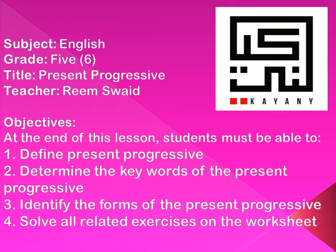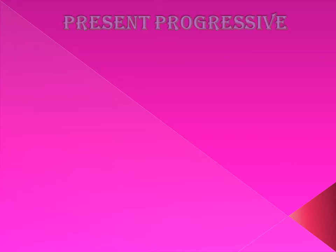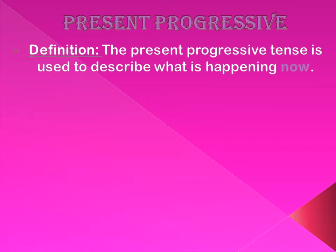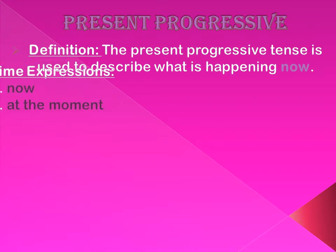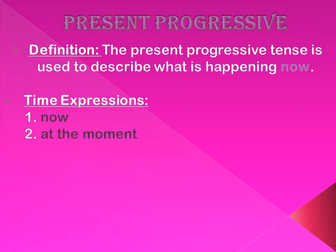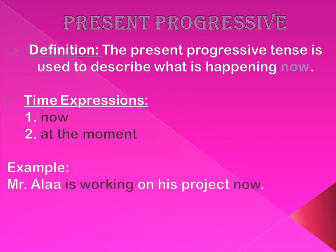Let's start our lesson. We'll start by defining the present progressive tense. The present progressive tense is used to describe what is happening now. Here are the timing expressions that are used to introduce the present progressive tense in a sentence. They are 'now' and 'at the moment.' Example: Mr. Allah is working on his project now.